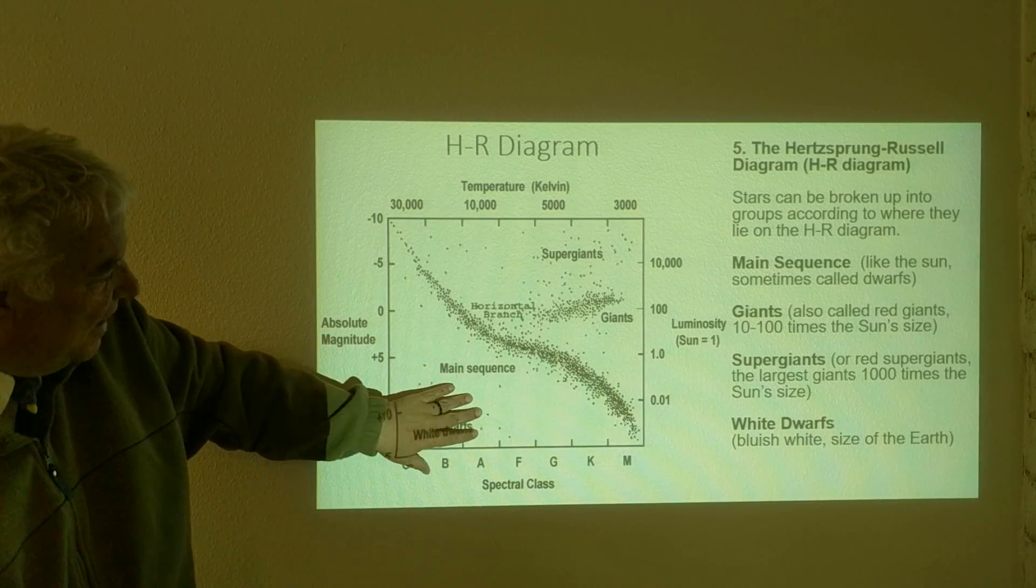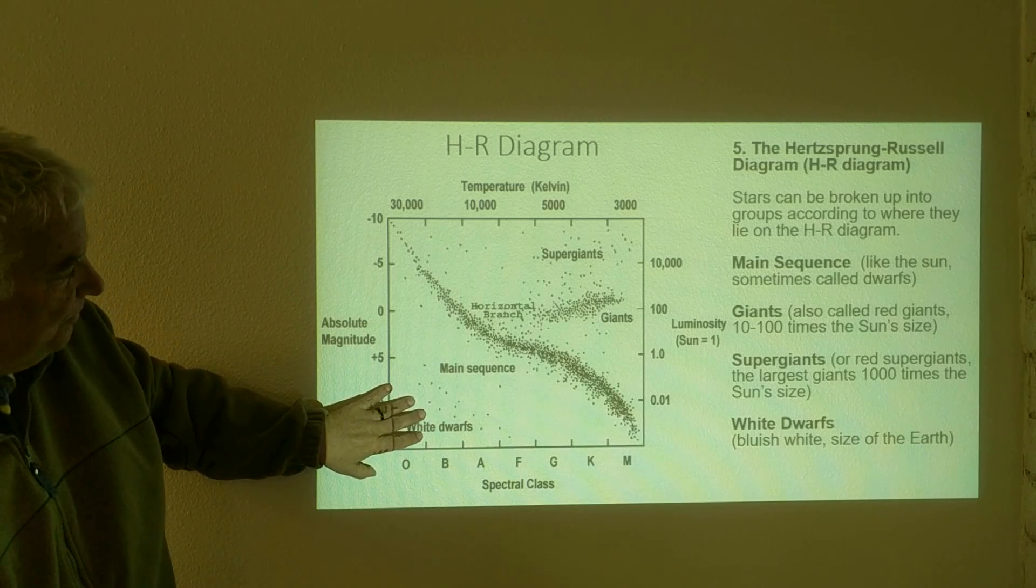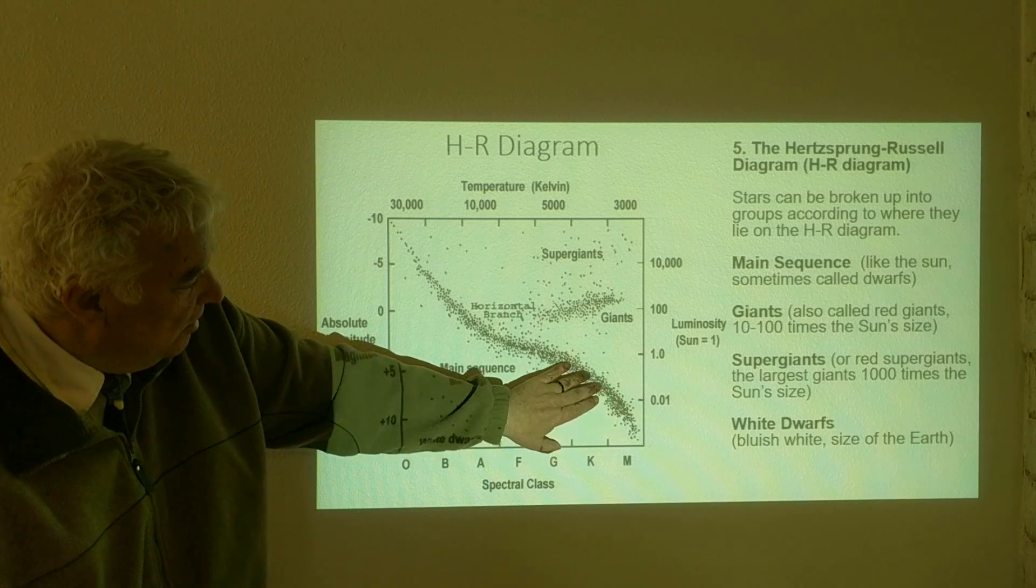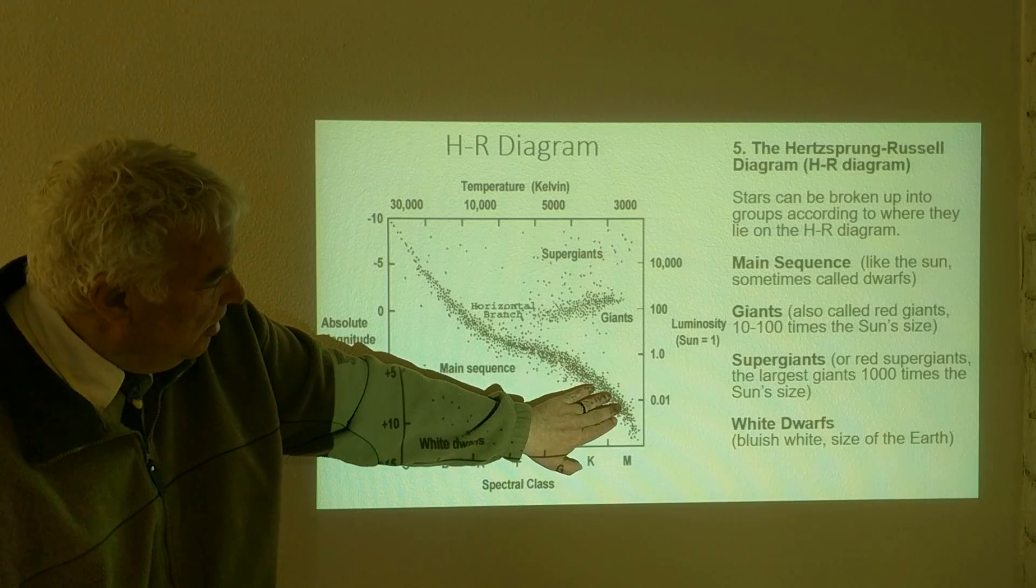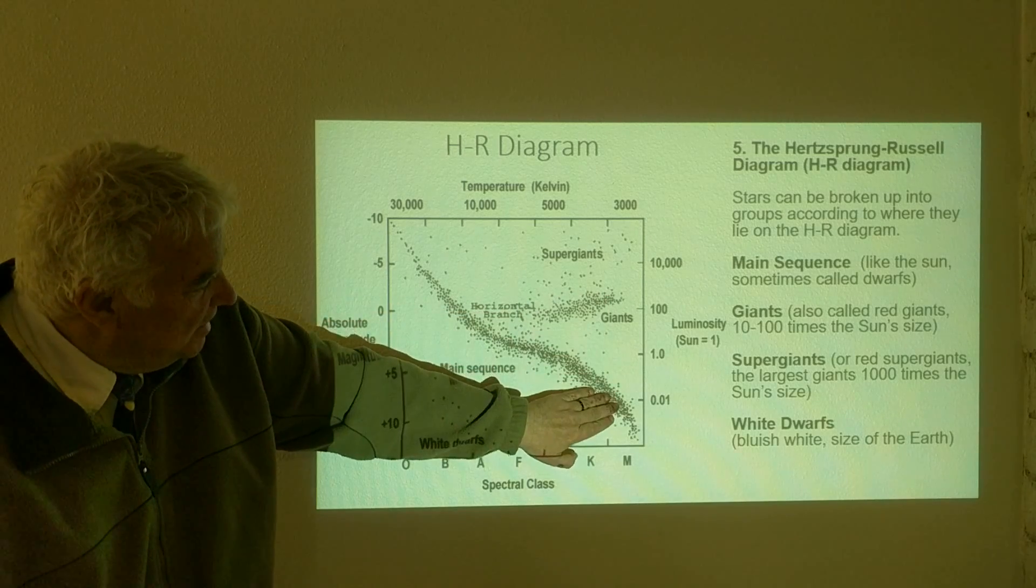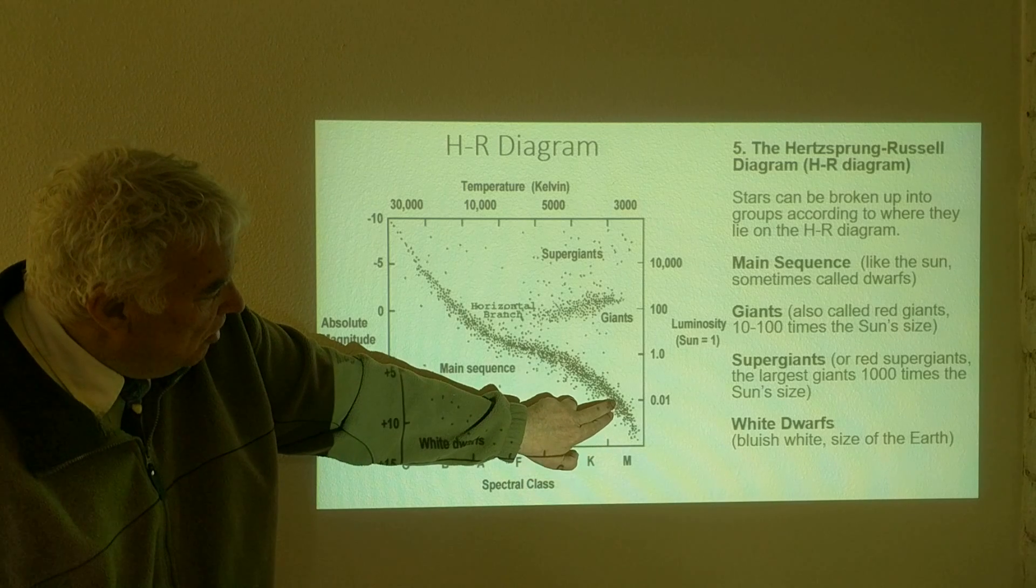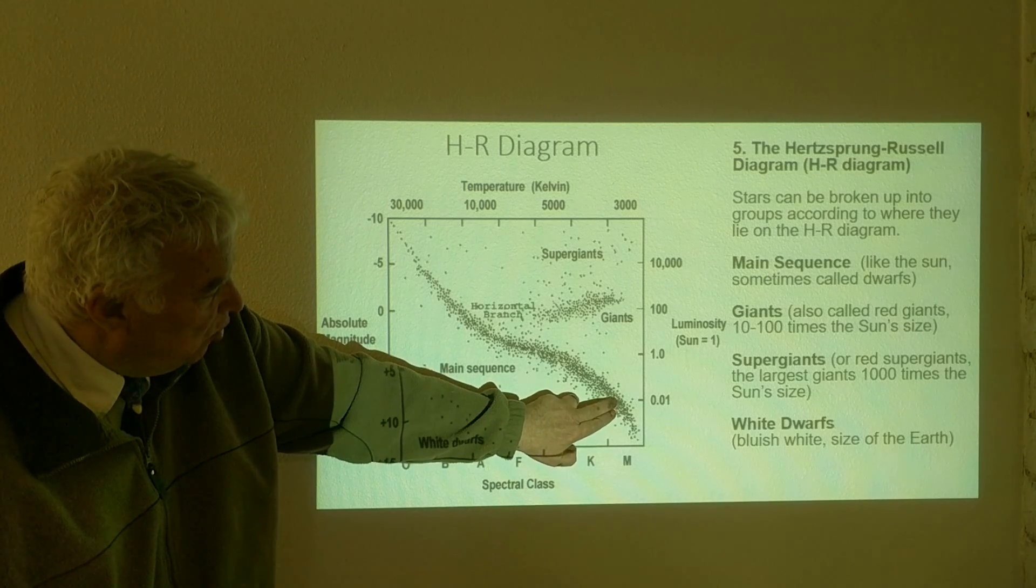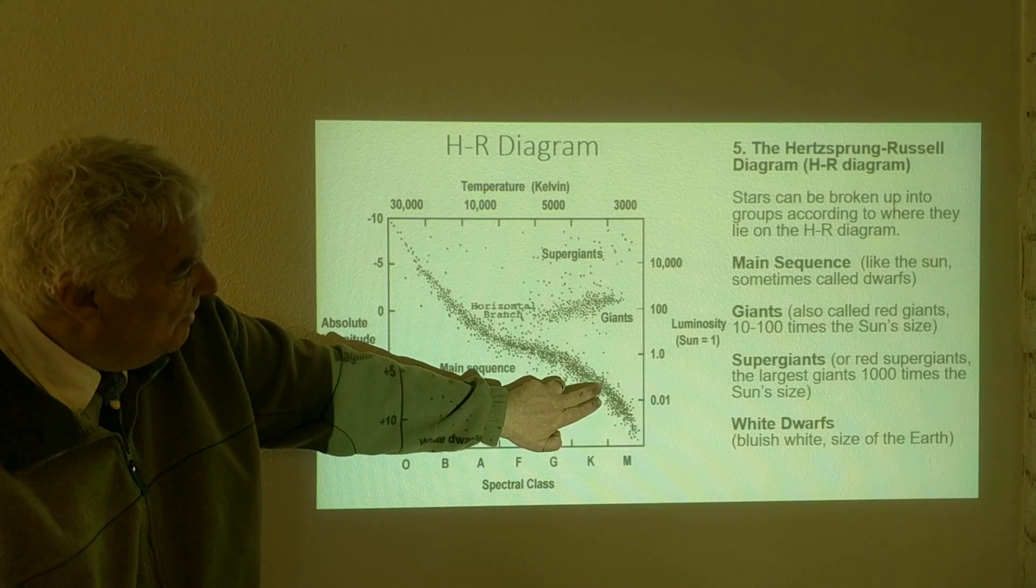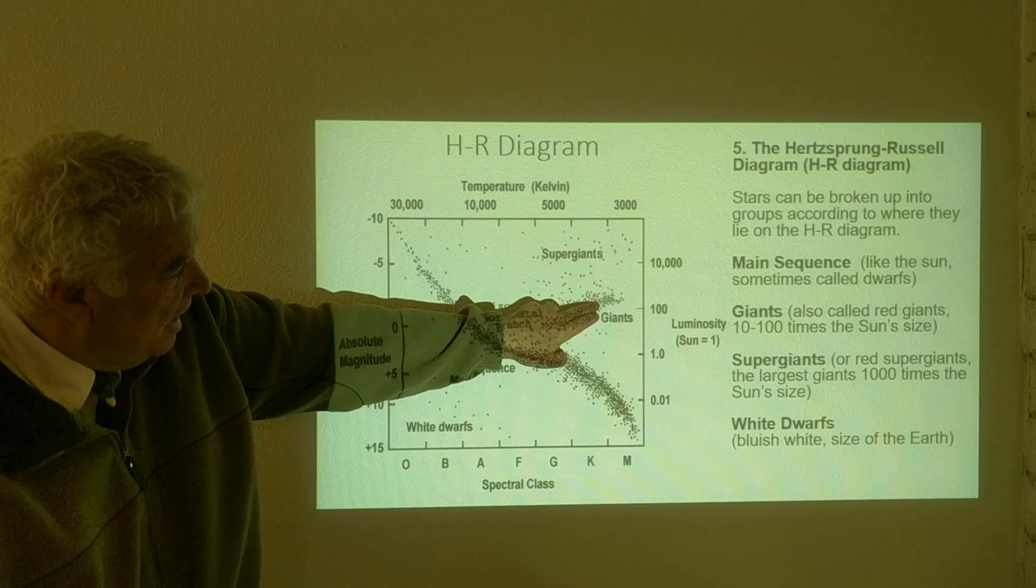So the white dwarfs are faint yet hot. And the cool ones along the main sequence over here are much smaller than ones up here because we can see these are the same color. So these M star main sequence, sometimes called M dwarfs, these M dwarfs are much fainter than the M and K giants.